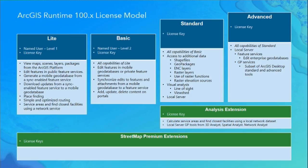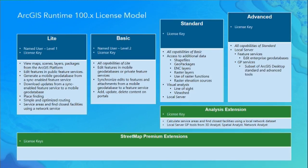A quick word on licensing. We have four licensing tiers: Light, Basic, Standard, and Advanced. Light allows you to view maps and layers from the ArcGIS platform — consuming mobile map packages and web maps is free with Light. Basic includes everything in Light and adds editing of secured services. Standard adds additional data types like shapefiles, geopackages, and raster layers. Advanced brings support for advanced local server functionality like geoprocessing and feature services. We also have an Analysis extension and a Street Map Premium extension for offline routing and vector base maps.